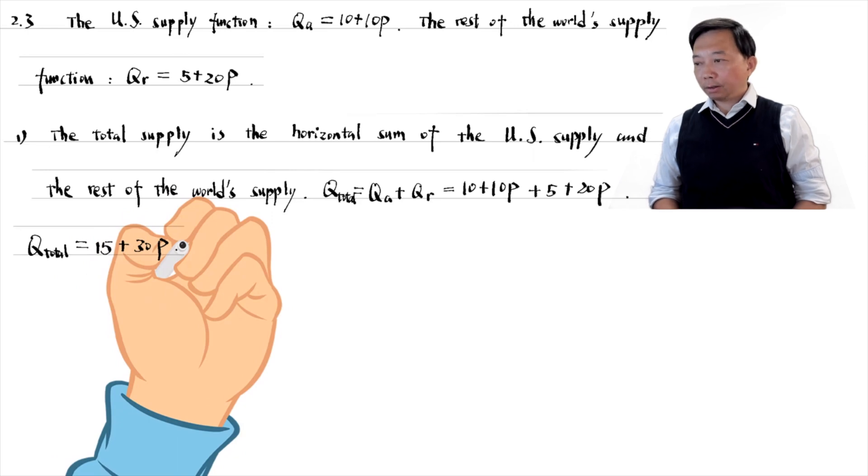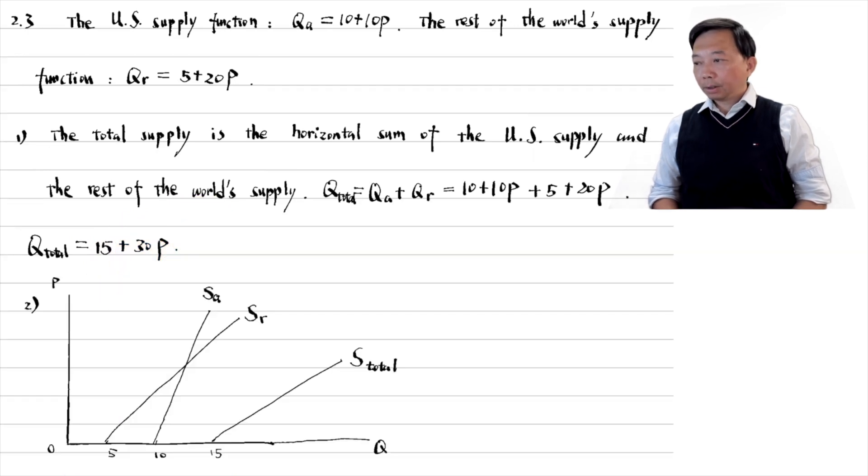We can illustrate it in a diagram. We find the intersection of the supply curve and the quantity x axis by setting the price equal to zero. Because the total supply curve is the horizontal sum of the US and the rest of the world's supply curves, the total supply curve is flatter than each of the other two supply curves.